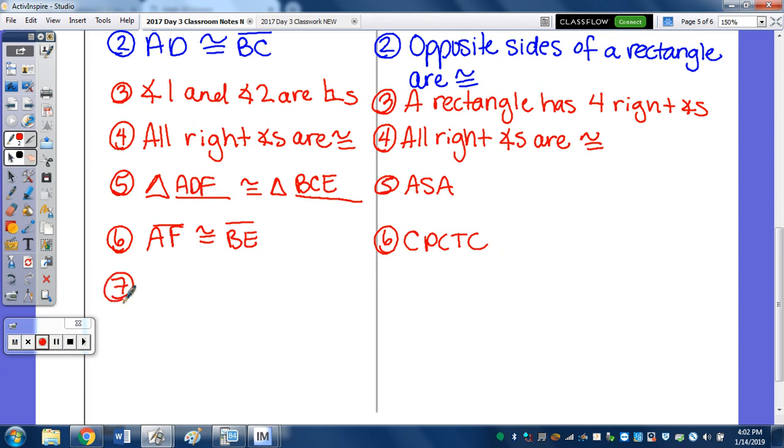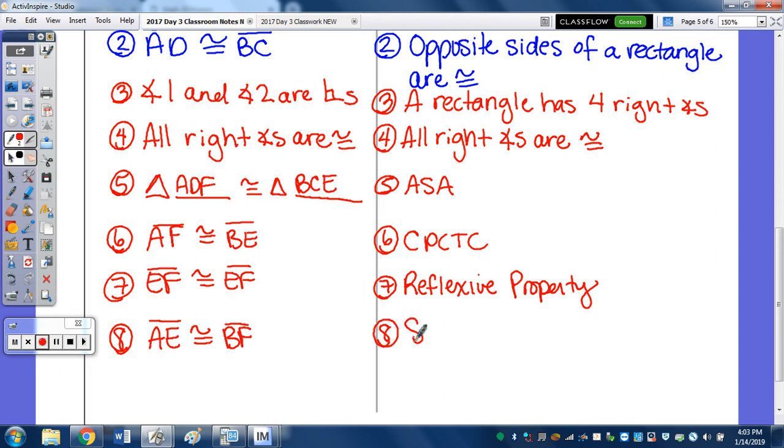Because those are corresponding sides. We're going to do EF congruent to EF by the reflexive property. And then AE is congruent to BF by the subtraction property.